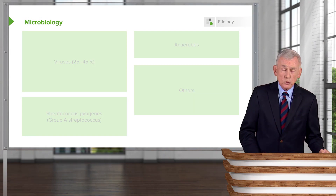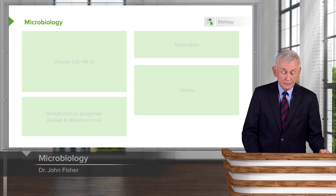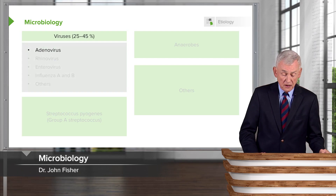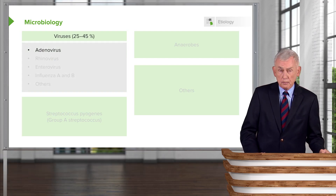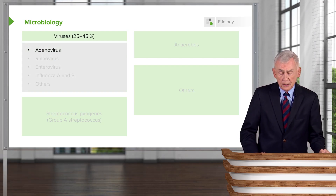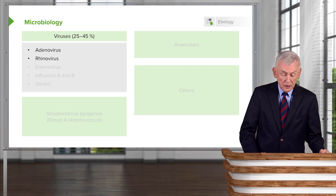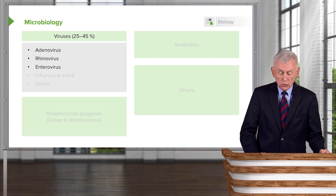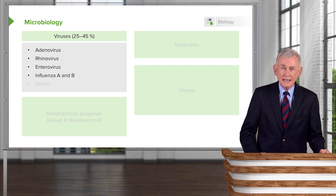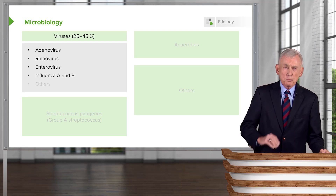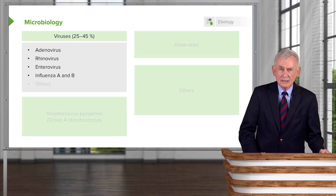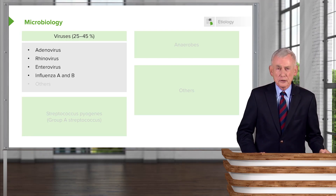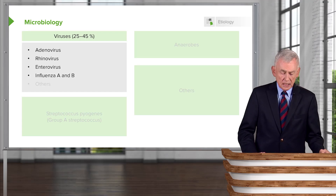Most causes of pharyngitis are viral — 25 to 40% at a minimum. These include adenovirus, rhinovirus, enterovirus, and influenza A and B. Influenza is usually a much more serious and troublesome infection, so patients may have pharyngitis but are usually sick in many other ways as well.